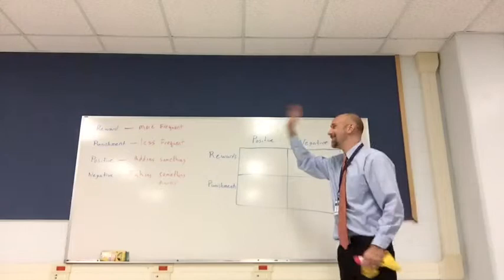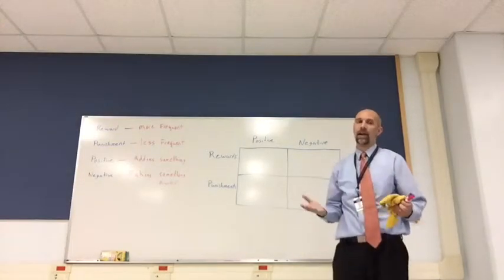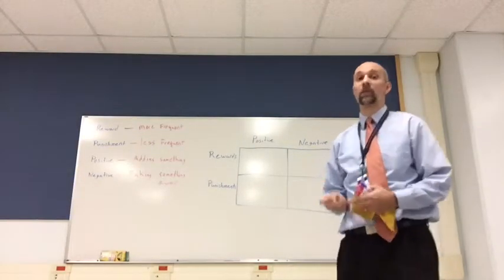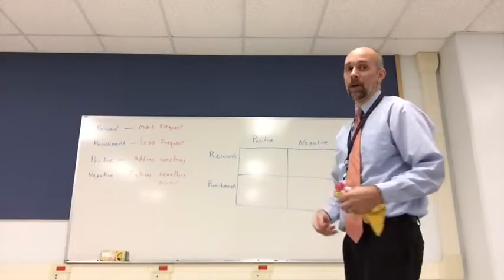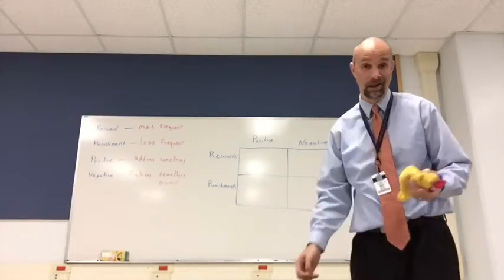Let's take a look inside the Punnett square and look at some examples of things that would count as positive punishments, positive rewards, negative punishments, and negative rewards.